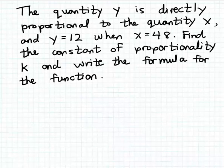In this example, the quantity y is directly proportional to the quantity x, and y equals 12 when x equals 48. We want to find the constant of proportionality k and write the formula for this function.